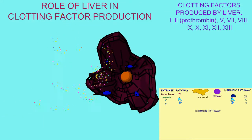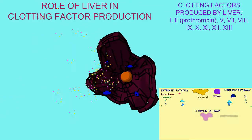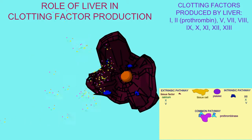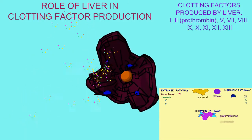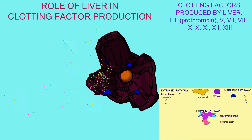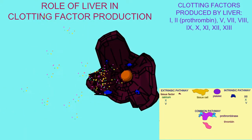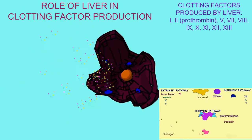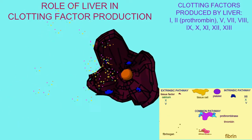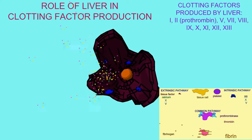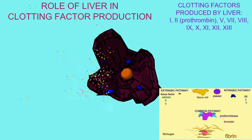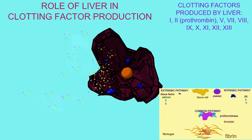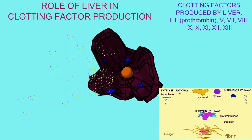Liver proteins synthesize a number of different clotting factors, such as clotting factor 1, clotting factor 2, which is prothrombin, clotting factors 5, 7, 8, 9, 10, 11, 12, and 13. Some clotting factors need vitamin K for their synthesis.